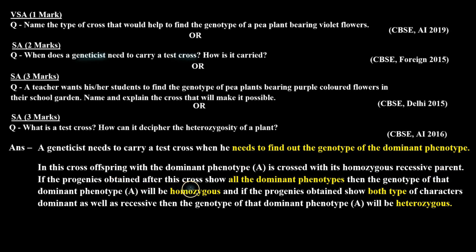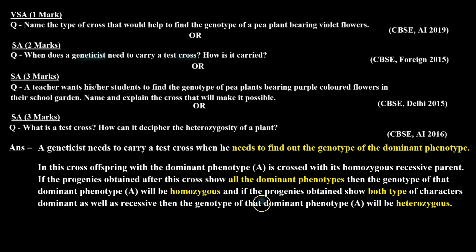If the progenies obtained after this cross show all dominant phenotypes, then the genotype of that dominant phenotype A will be homozygous. If the progenies obtained show both types of characters — dominant as well as recessive — then the genotype of that dominant phenotype A will be heterozygous.